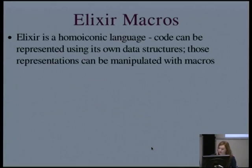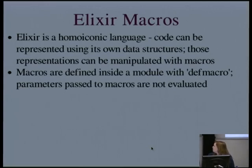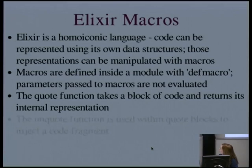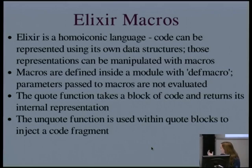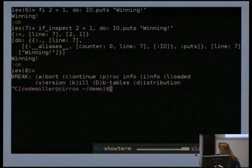Elixir is a homoiconic language — you can represent it in its own data structures, generally in the form of tuples. Macros allow you to manipulate those data structures. Macros are defined with the 'defmacro' keyword instead of just 'def', but they must be defined in their own module. Parameters passed to them are in that internal representation form. The functions 'quote' and 'unquote' — familiar to anyone who knows Lisp — allow you to work with this. Quote takes a block of code and returns its internal representation; within a quoted block, unquote allows you to inject a code fragment. Macros are hygienic by default, meaning they won't clobber variables in the local scope where they're called, but you can optionally turn that off.